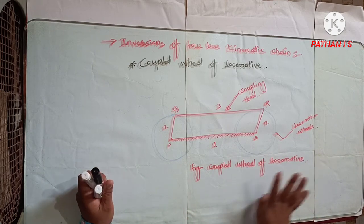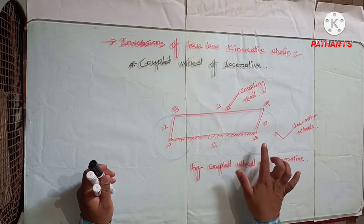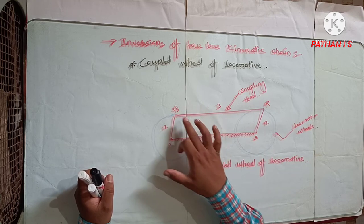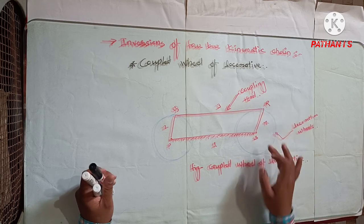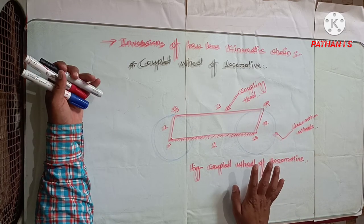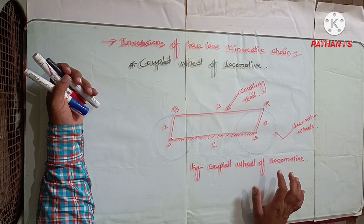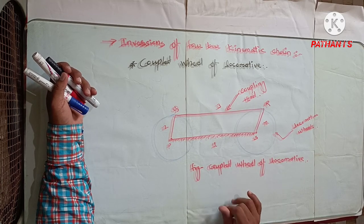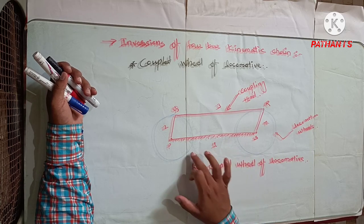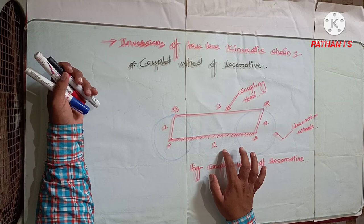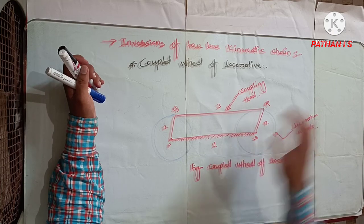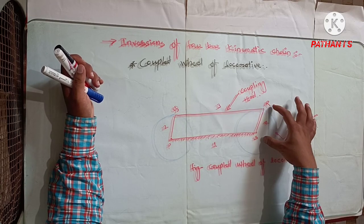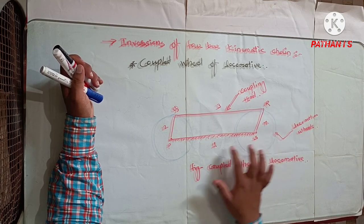This mechanism consists of four links. Link PS, which is the fixed link; second, PQ; third, QR; and fourth, RS. There are four pairs and all these four pairs are turning pairs. The link one, that is PS, is fixed. The opposite link, which is parallel to this fixed link, and the other two links PQ and SR are shorter than the fixed link.